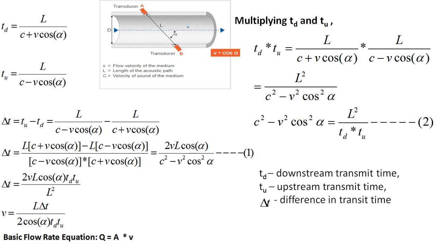The difference in transit times is delta T = Tu - Td, which gives: delta T = 2VL cos(alpha) / (C² - V² cos²(alpha)). By multiplying Td by Tu, we get C² - V² cos²(alpha) = L² / (Td × Tu), where Td is the downstream transmit time and Tu is the upstream transmit time.